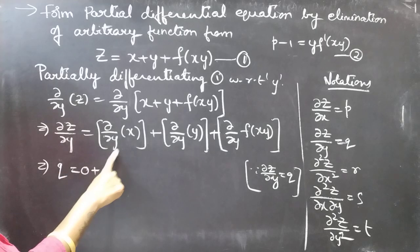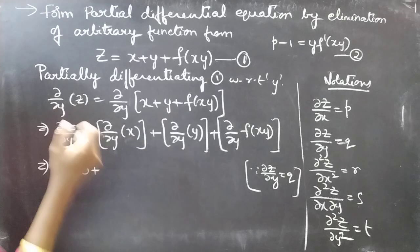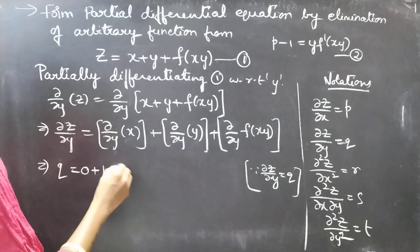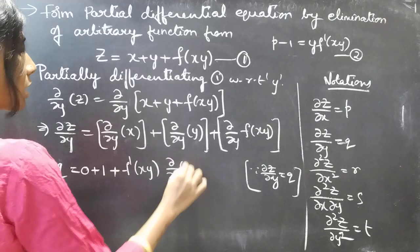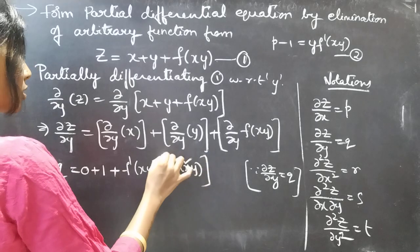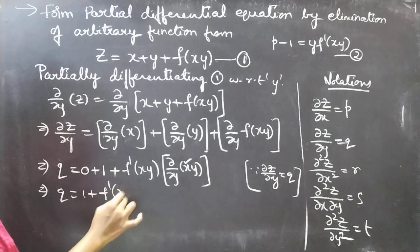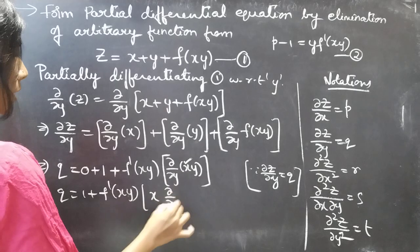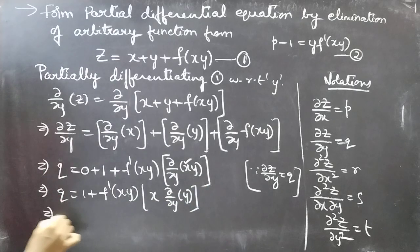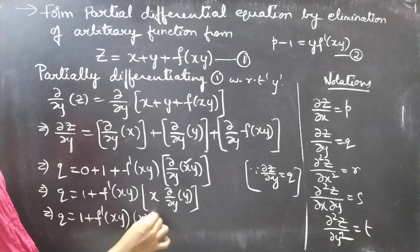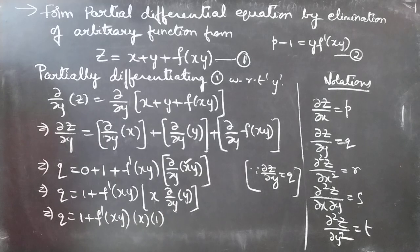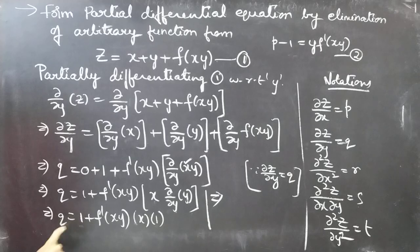Since we are partially differentiating with respect to y, we treat x as constant. So Q = 0 + 1 + f'(xy) · ∂/∂y of (xy). Here x is constant, so we write this as x · ∂y/∂y. This gives us Q = 1 + f'(xy) · x · 1, that is Q = 1 + x·f'(xy). Bringing the 1 to the LHS: Q − 1 = x·f'(xy).